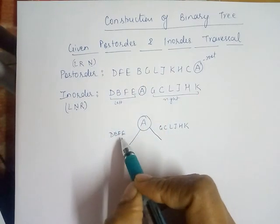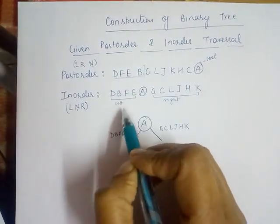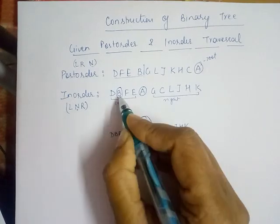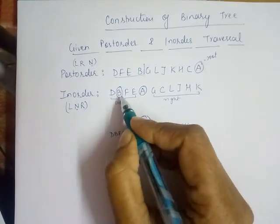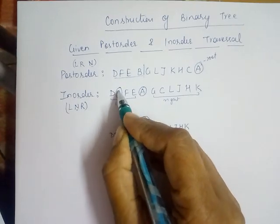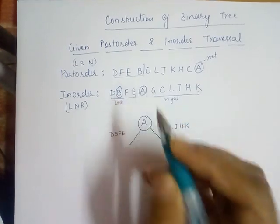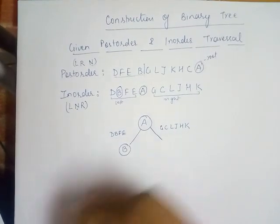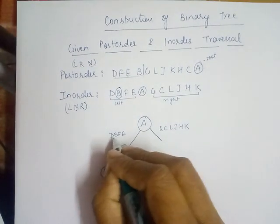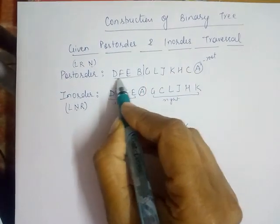Now for the sequence 'dbfe', we look in the postorder to find which symbol comes last. In this whole sequence, 'b' comes last, so 'b' becomes the node. If 'b' is the node, then 'd' becomes the left child and 'fe' becomes the right child.